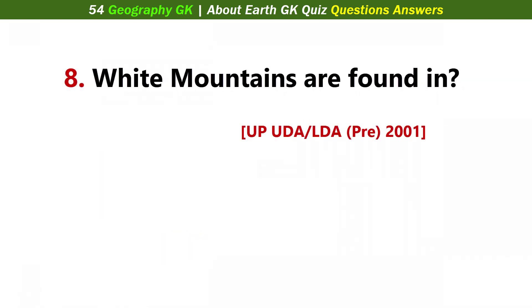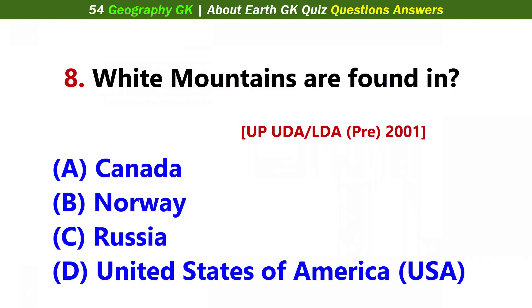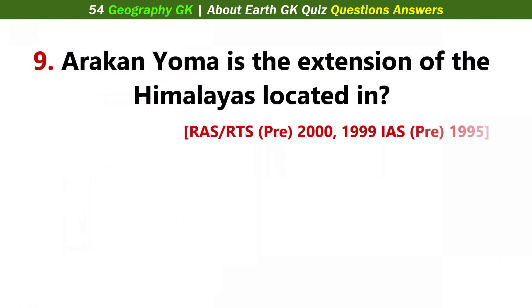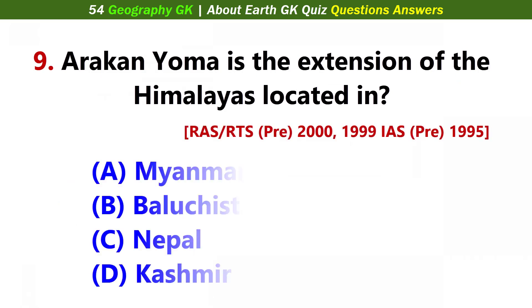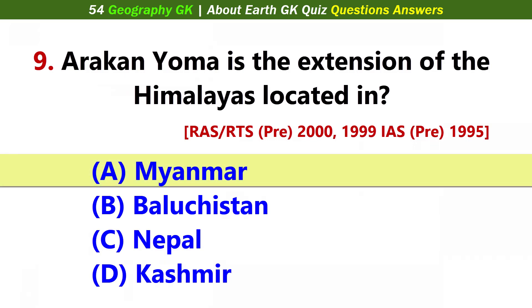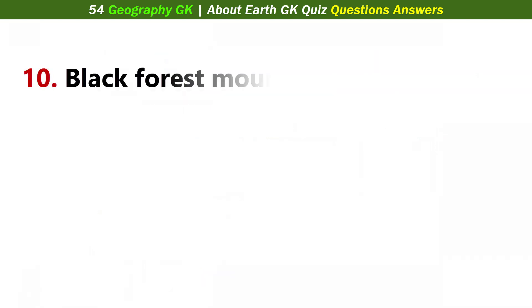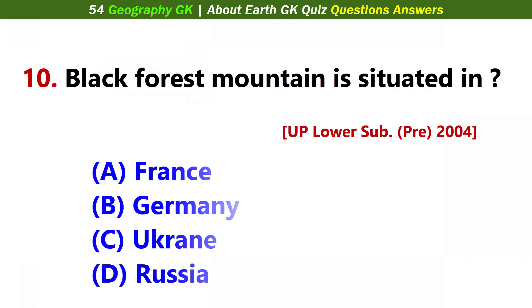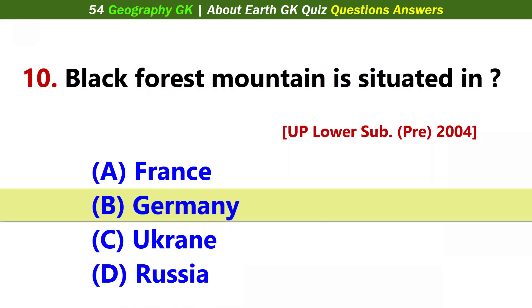White Mountains are found in... Answer D: United States of America. Arakan Yoma is the extension of the Himalayas located in... Answer A: Myanmar. Black Forest mountain is situated in... Answer B: Germany.